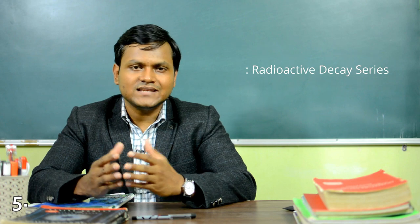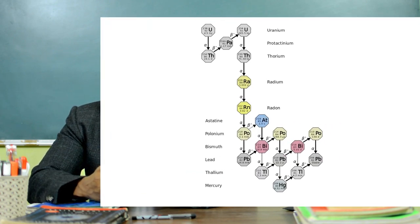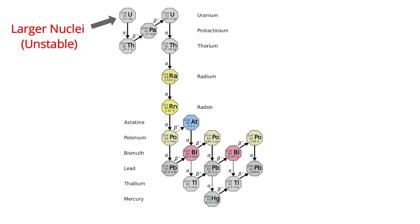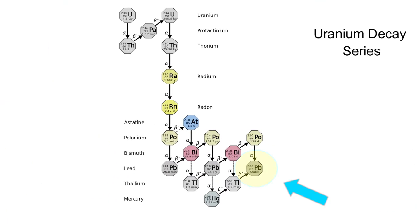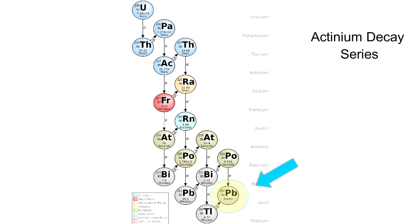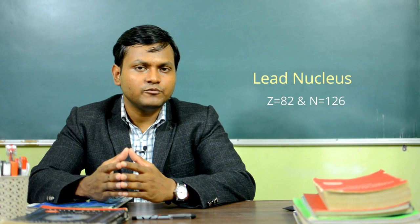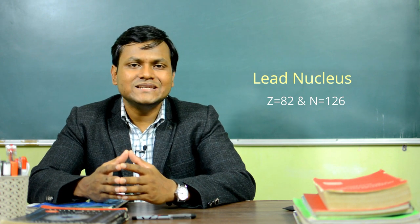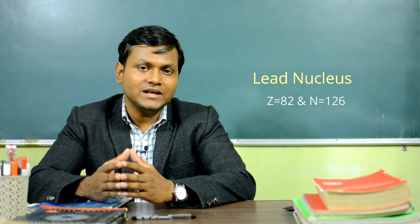Next is the case of the radioactive decay series — naturally occurring series in which a larger nucleus undergoes successive radioactive disintegrations and finally stops when a very stable nuclear species is reached. Out of the four radioactive decay series, three end with lead: the uranium decay series, the thorium decay series, and the actinium decay series all stop at lead. Lead has 82 protons and 126 neutrons, which also corresponds to double magic numbers.